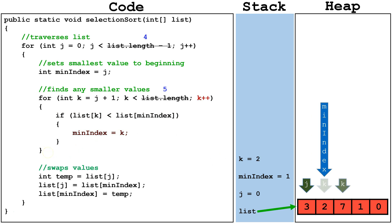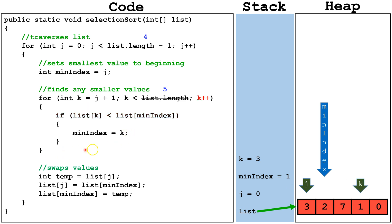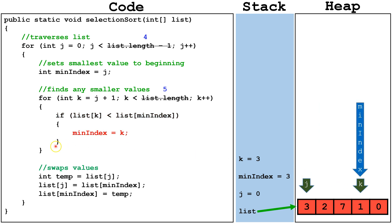Next, we get to the end of the internal for loop and we increment k by 1. k is now pointing at index 2. We check is k less than 5. It is, so we can continue the internal for loop. We check is list index k, which is pointing at a 7, less than list min index, which is pointing at a 2. This is false, so we skip this line of code and go to the end of the internal for loop, where we increment k by 1. We check is k still less than 5. It is, so we check is list index k less than list min index. It is, so we move min index over to k.